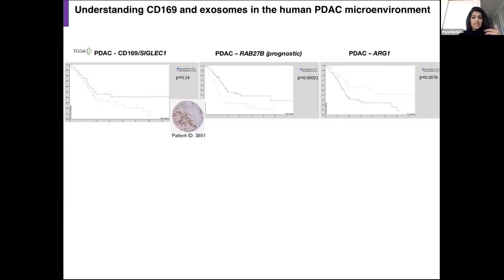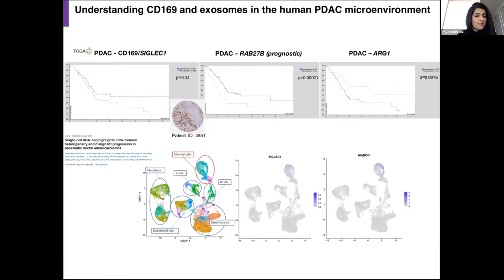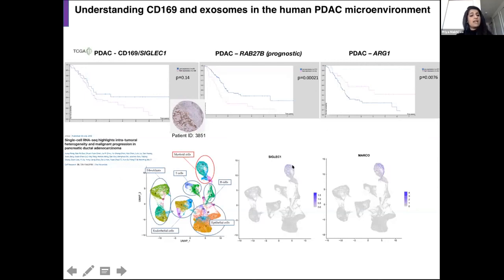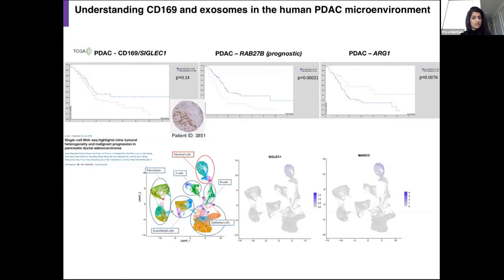Within the myeloid cluster, we do find CD169- or Siglec-1-positive cells. Although these cells don't cluster as distinct computer-generated clusters, they take on a unique part of these clusters compared to Marco-positive cells. Marco is another cell surface receptor thought to mark M2 macrophages. I will continue this work to understand the signature of CD169-positive macrophages compared to other TAM subtypes.